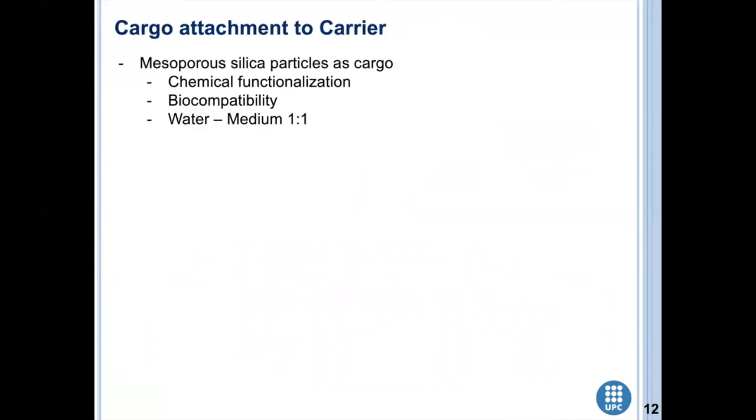Then polylysine was used to functionalize mesoporous silica particles. These particles were chosen because you can easily functionalize them with different chemical strategies. They are biocompatible and they can be loaded with further actives. The effective functionalization of the mesoporous silica particles was evaluated with the difference in the zeta potential before and after the functionalization, obtaining a change from minus 39 millivolts to plus 20 millivolts.